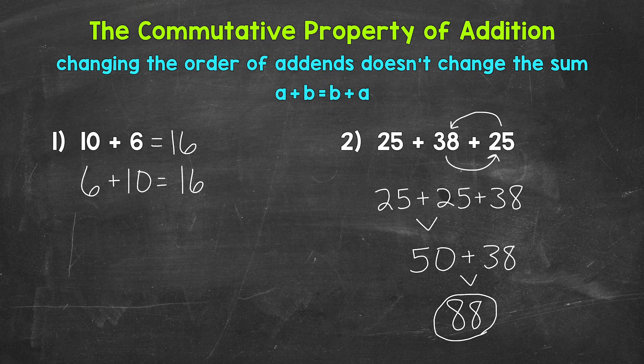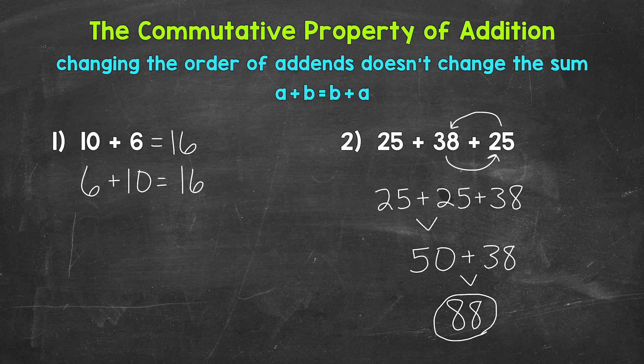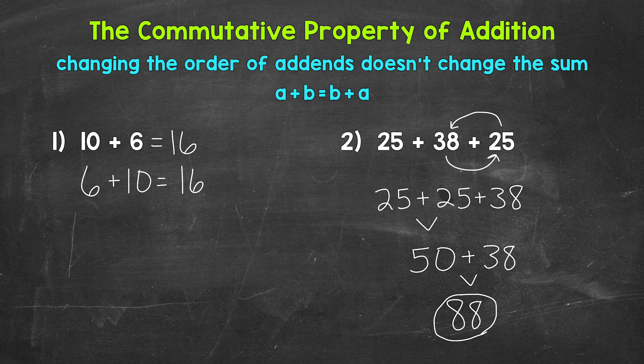Now could we have worked from left to right, starting with 25 plus 38 and then adding that 25? Yes, we still would have gotten 88. But again, we used the commutative property to make this problem simpler to work through.